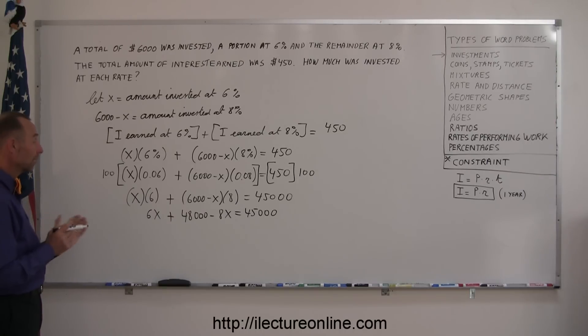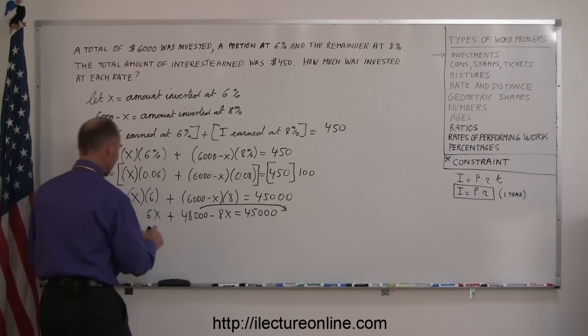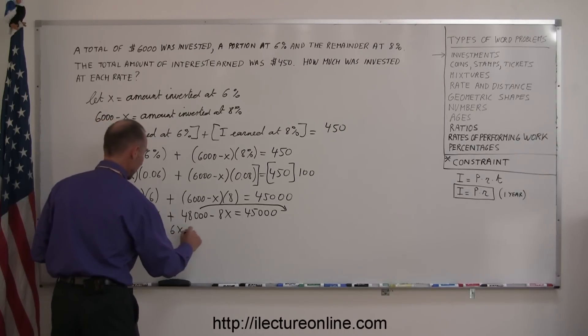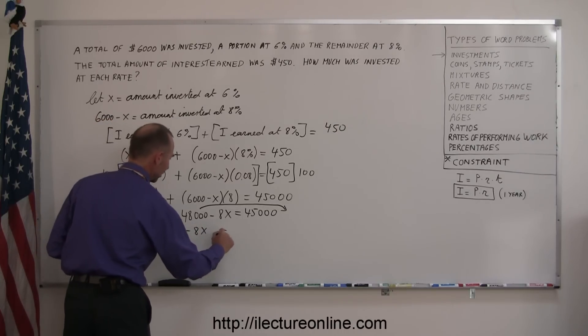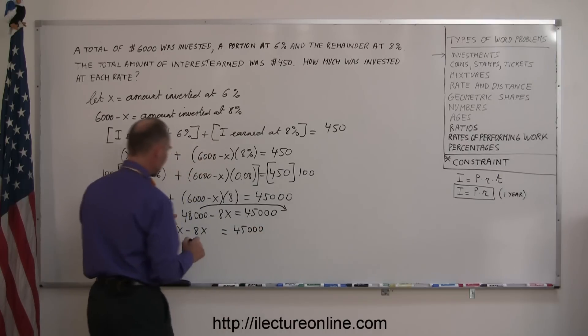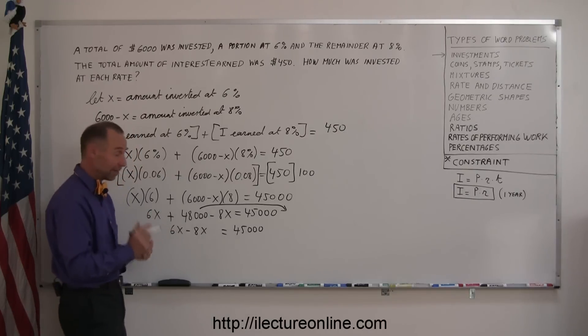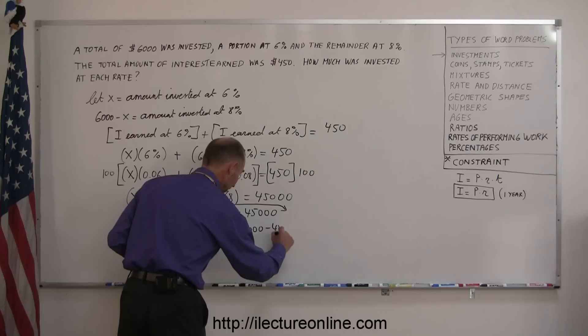All right, next thing I need to do is move everything that's not associated with X to the right side, so move this to the right side. And so I end up with 6X minus 8X on the left side equals 45,000. And when I move the 48,000 to the right side, I go across the equal sign, I have to change the sign, so that becomes minus 48,000.